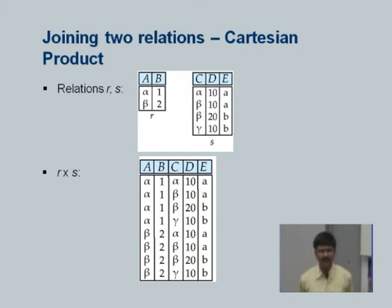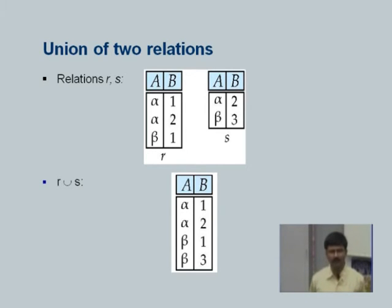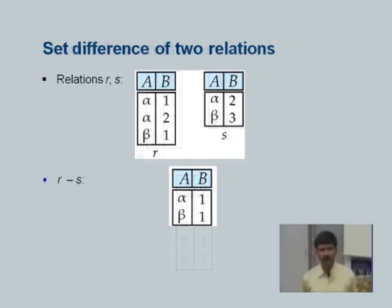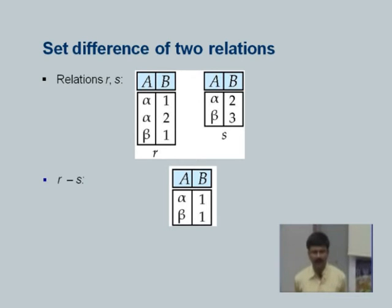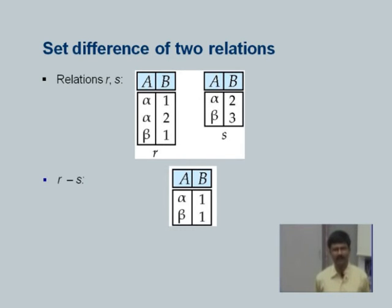The next one is the union operation, which should be obvious — take two relations with the same attributes and the union simply puts their rows together. If there are duplicates, in relational algebra the duplicates are removed. In SQL by default duplicates are also removed, although you can tell SQL to keep duplicates. The next operation is set difference — R minus S gives you rows of R which do not occur in S. In this case R has alpha 1 which does not occur in S, and alpha 2 which does occur in S so it is removed, and beta 1 which does not occur in S. So the result of R minus S has alpha 1 and beta 1. Then there is the intersection operation — it outputs rows which are in both relations.